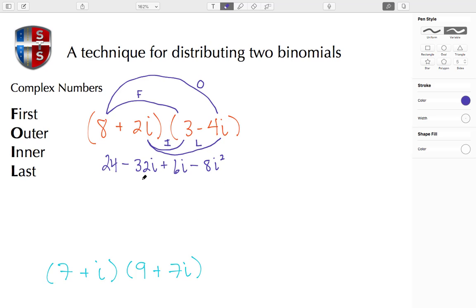We're going to look to combine like terms. So here we have the negative 32i plus 6i. Well, I know it's going to be negative, so minus 2 makes that 30, minus 4 makes that negative 24i.